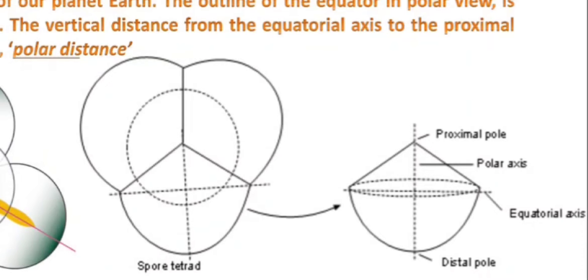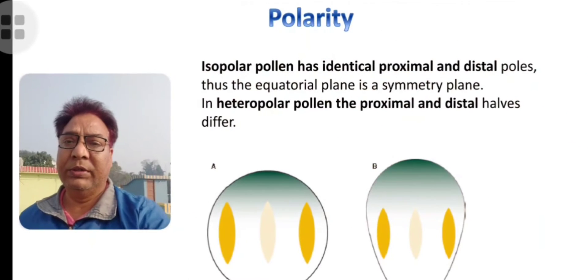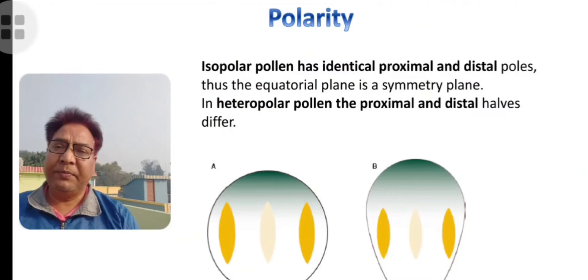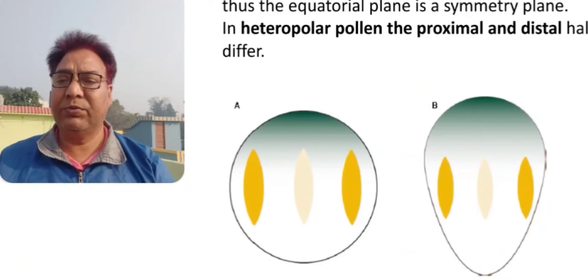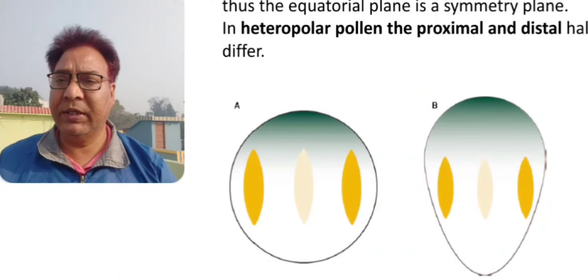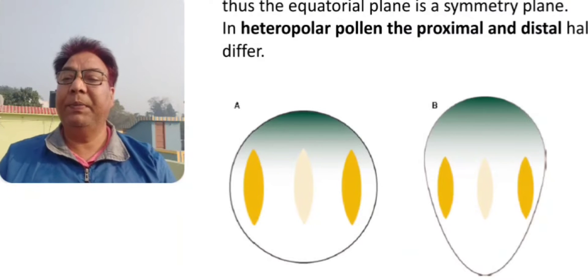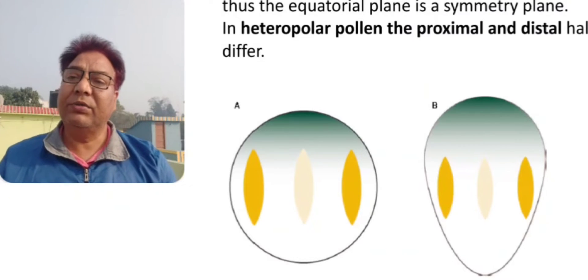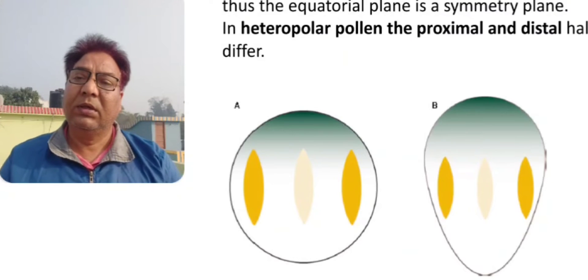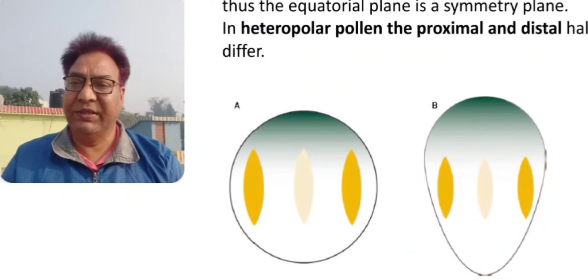By this, you can distinguish whether spores are heteropolar or isopolar. Under the microscope, you cannot distinguish which pole is proximal, which is distal. An isopolar spore has only one horizontal plane of division through which if you cut the spore, you will get equal halves that are mirror images of each other.